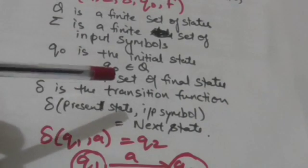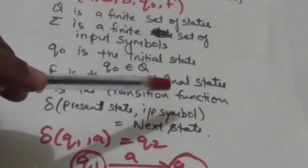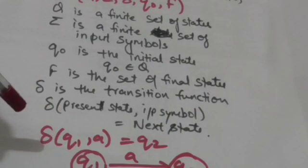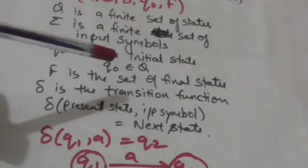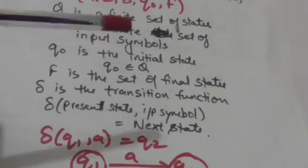DFA M takes two inputs: present state and an input symbol, and gives output the next state.